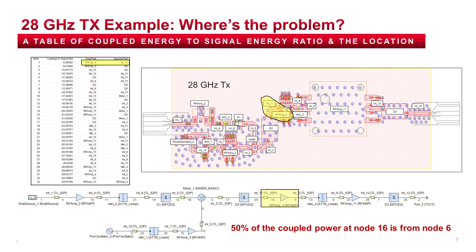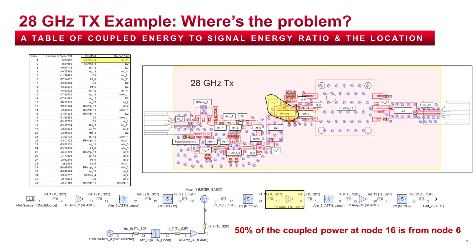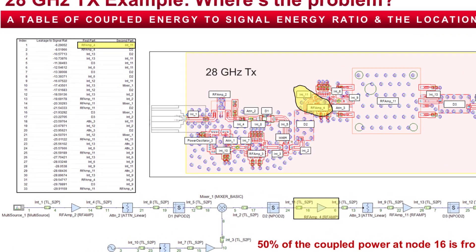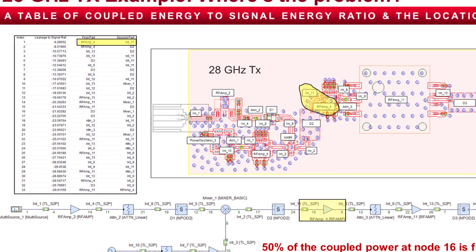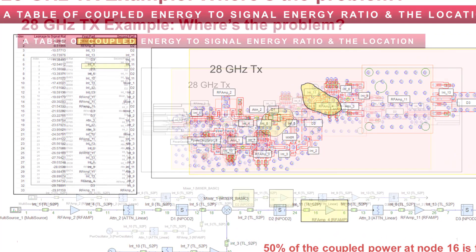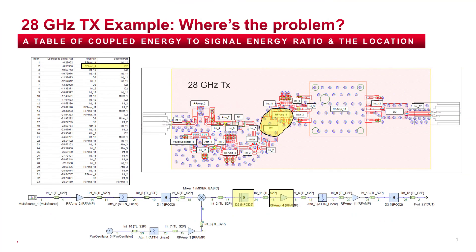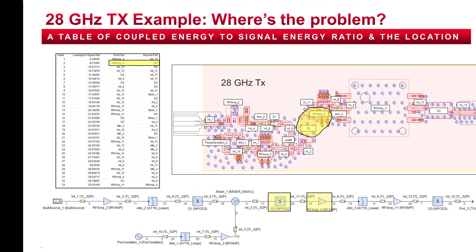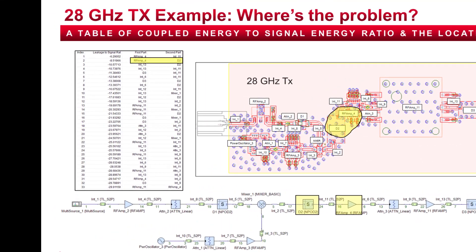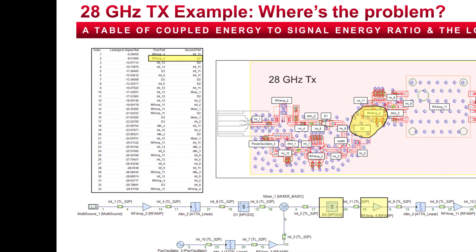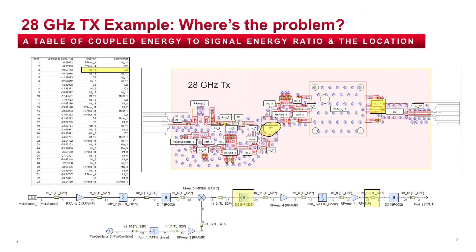Once a path is defined in Spectrosys, the EM effects for all nodes versus all nodes can be accurately simulated, including cavity resonance effects due to the enclosure. SystemVue helps designers make educated choices by visualizing the leakage effects in table form with node versus node leakage ordered by severity.